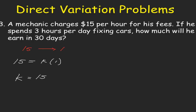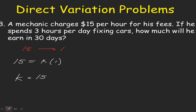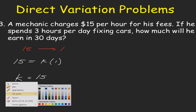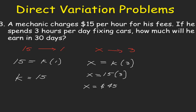Continuing, if he spends 3 hours per day, we do not know what the amount will be for 1 day or for 3 hours. So this will be x, since we do not know the value. So x is to 3 hours. Our direct variation equation will be x is equal to k times 3. We know that the value of k is 15. So 15 times 3 gives us $45 per day for every 3 hours.